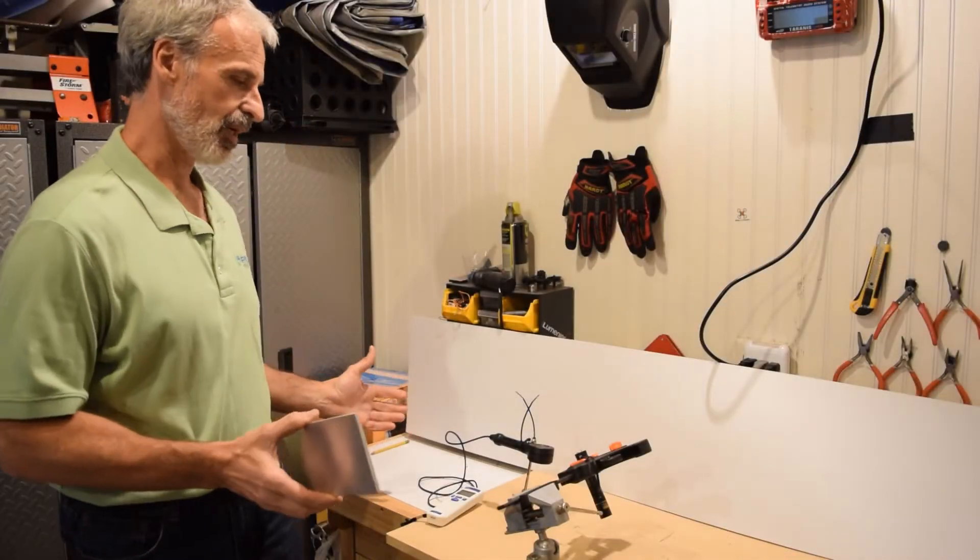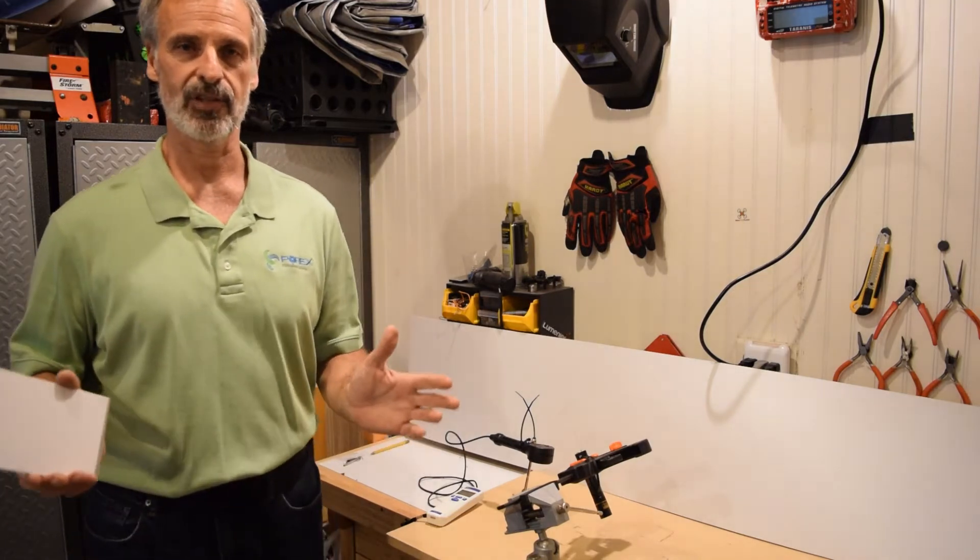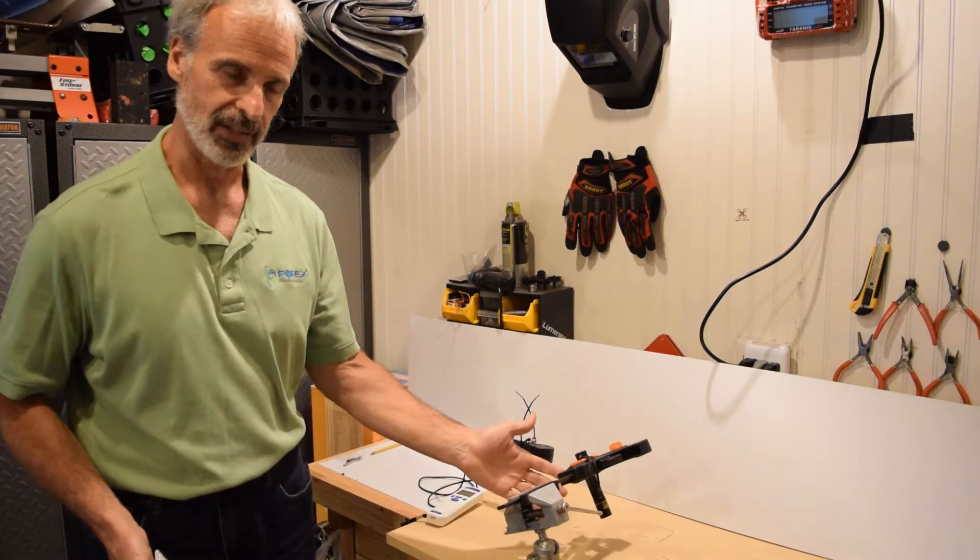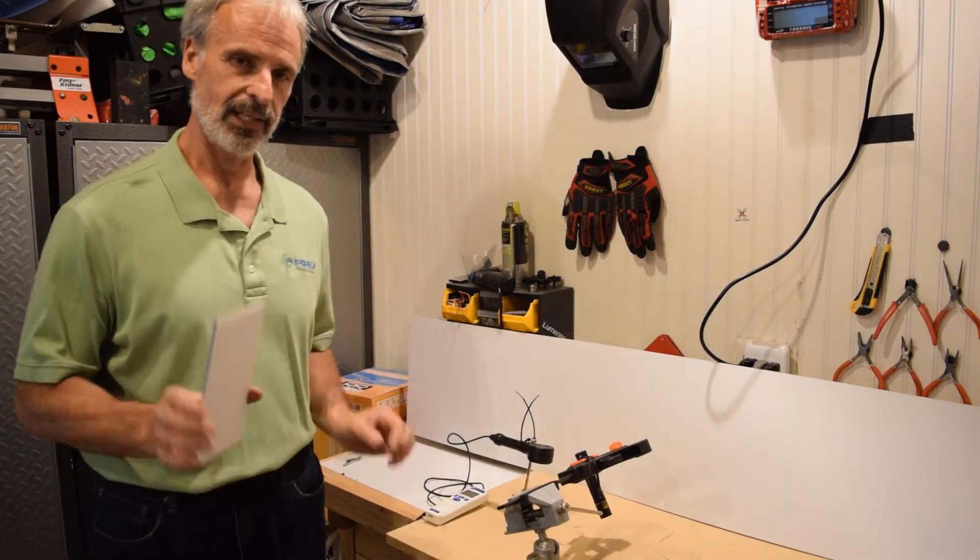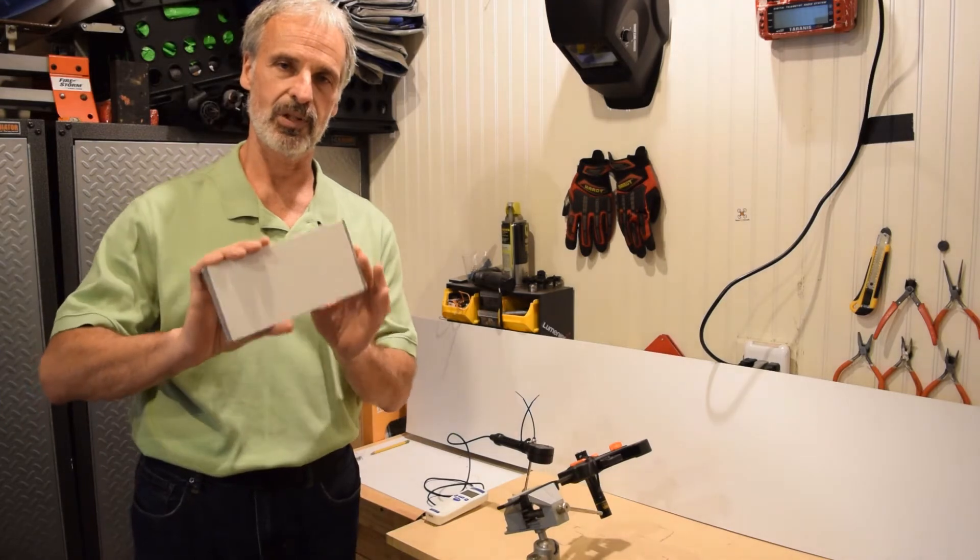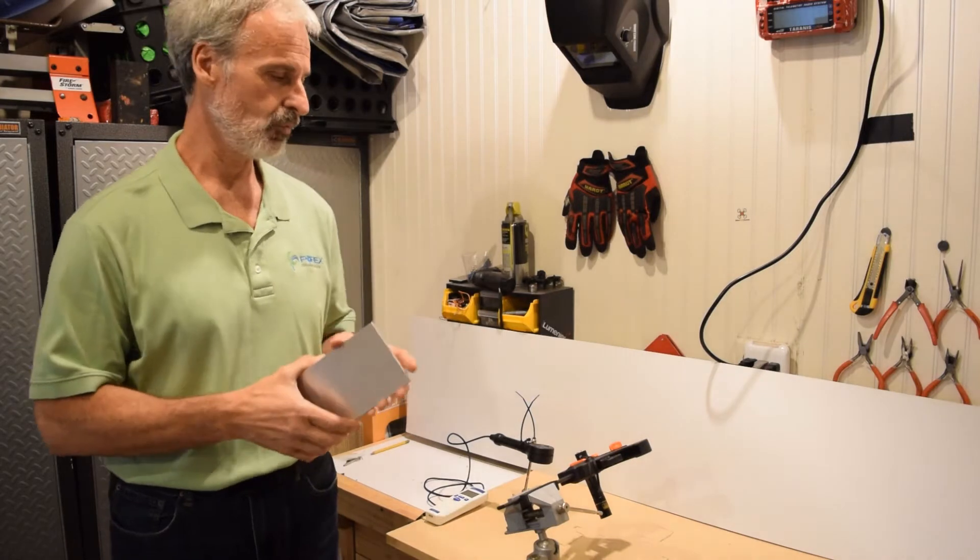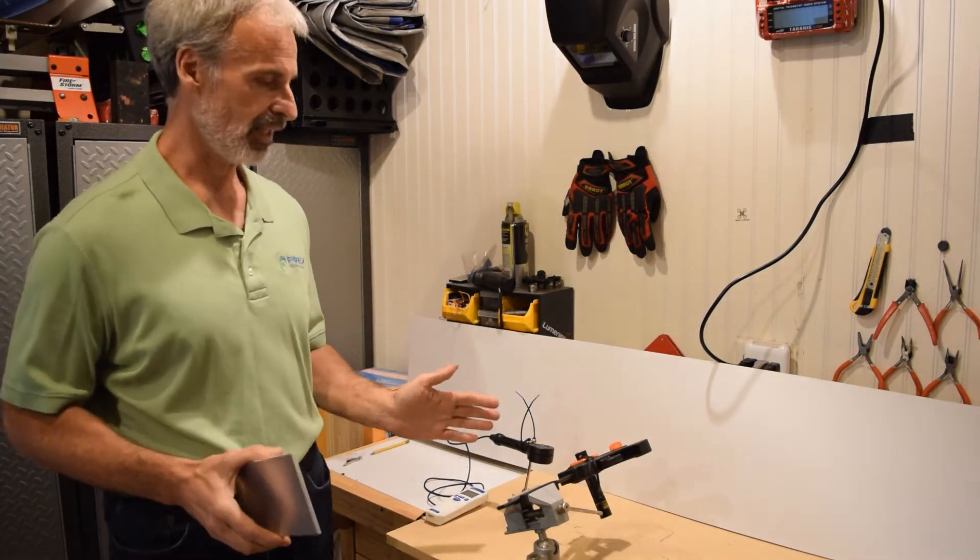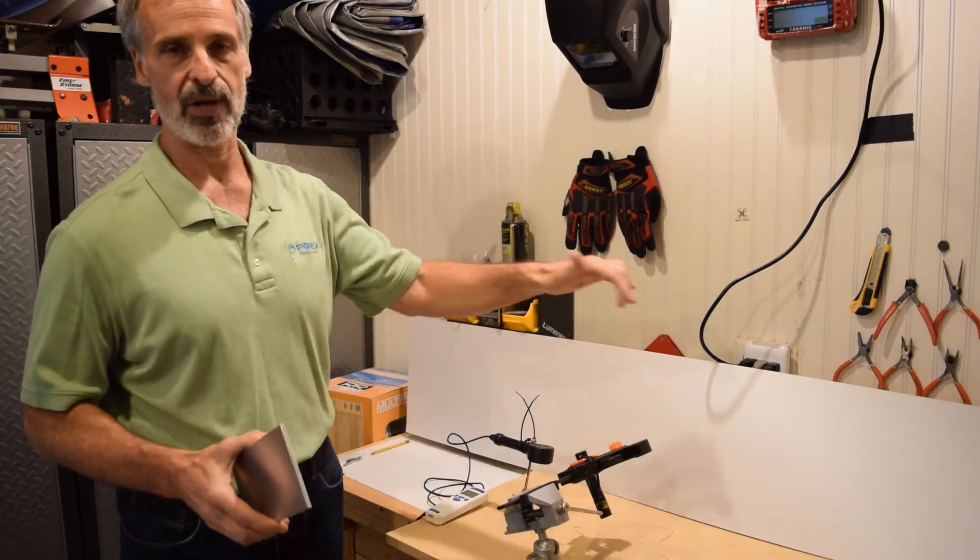We have set up a simple experiment to demonstrate the amazing reflectivity of Porex Vertec PTFE. As part of the experiment, we have a UV flashlight, a UV power meter, and a two-sided reflector, one side being Porex Vertec PTFE and the other side being straight aluminum. What we will do is have the flashlight at an angle and then at 90 degrees to demonstrate the amount of reflected light around the sample.